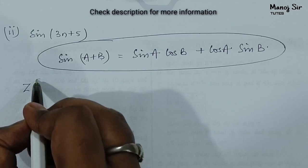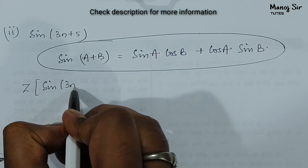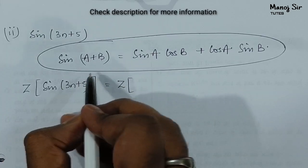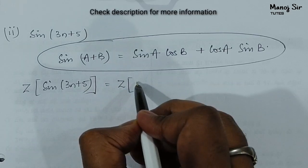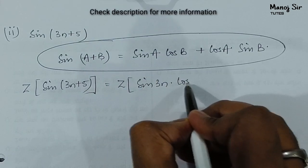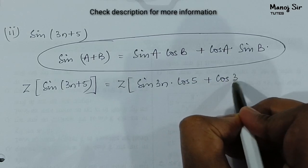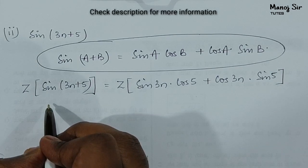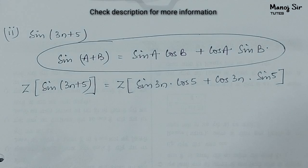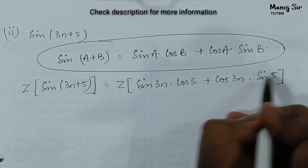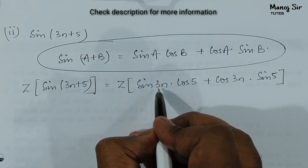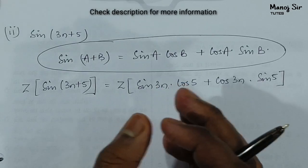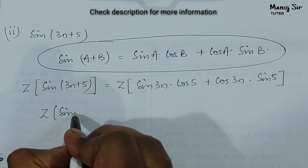So the Z-transform of sin(3n+5) becomes the Z-transform of sin(3n)·cos(5) plus cos(3n)·sin(5). Here sin(5) and cos(5) are constants. We need the formulas for Z-transform of sin(nθ) and cos(nθ) to proceed.